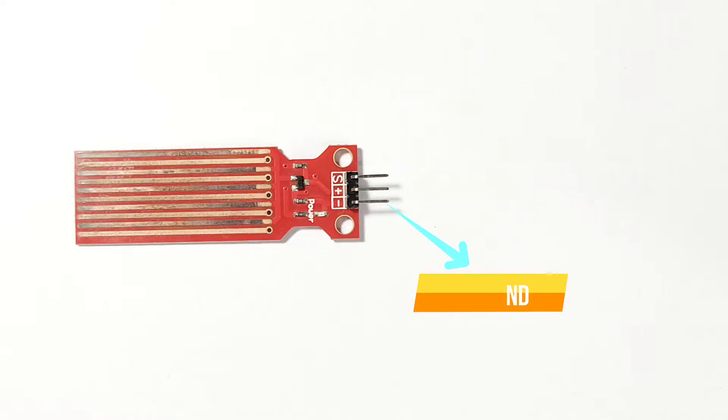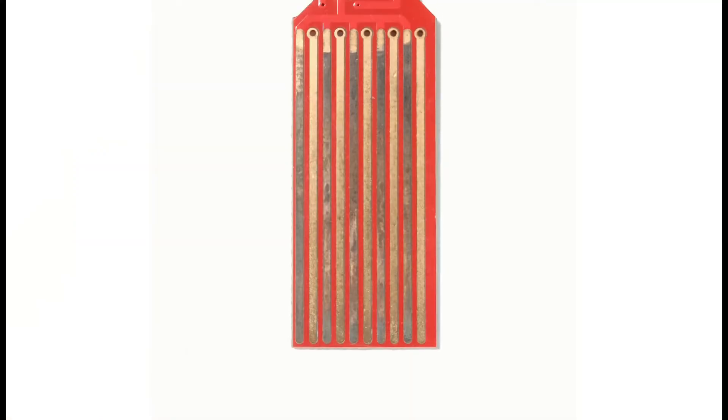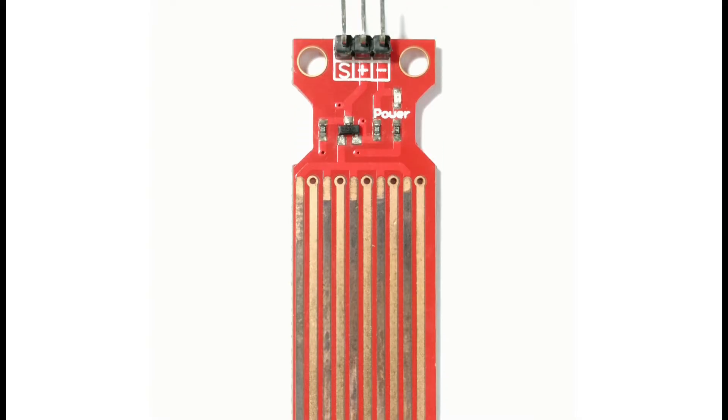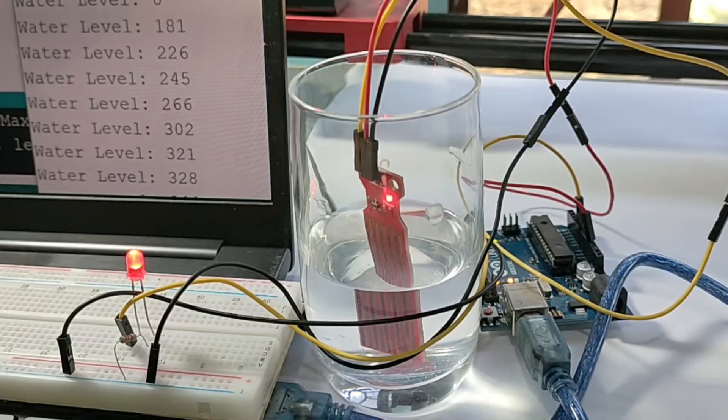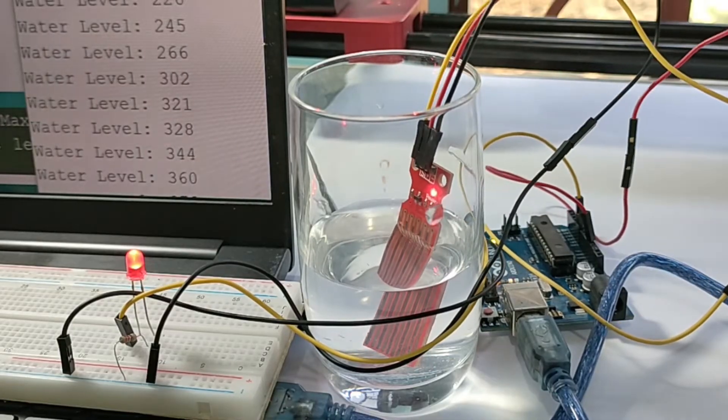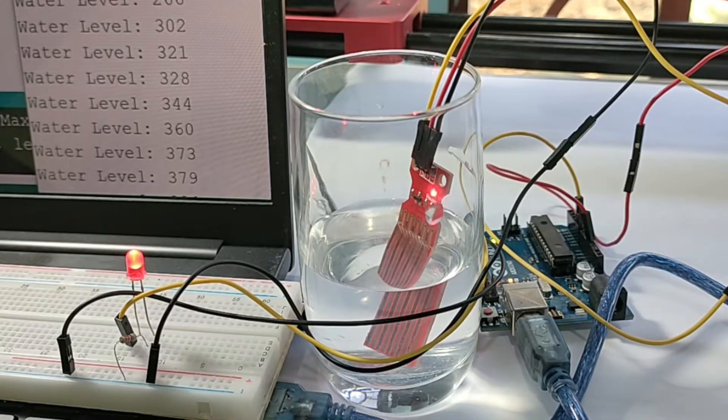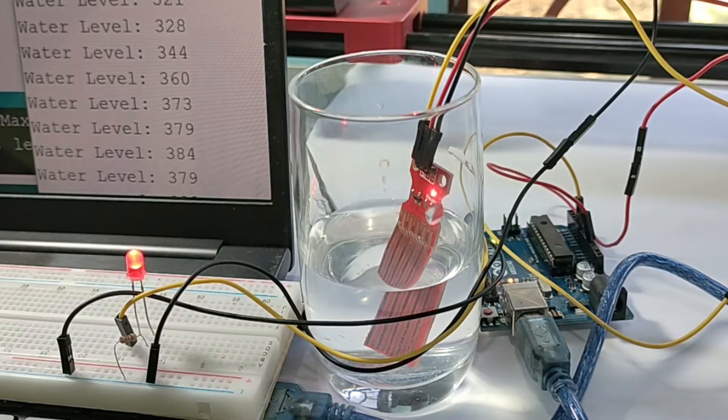The sensor has several exposed conductive tracks, and as the water level rises, these tracks get submerged. When water bridges these tracks, it changes the electrical resistance, which the sensor then translates into a signal that the Arduino can read. It's a simple yet effective way to keep tabs on your water levels without getting your hands wet.